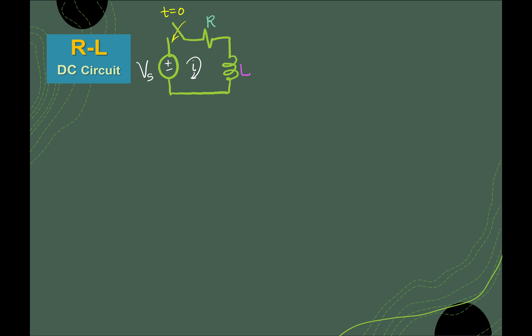Our goal here is to understand the behavior of a RL circuit. From our previous lectures, we have learned about Kirchhoff's Voltage Law — that is, the summation of voltages is equal to zero, or the summation of voltage drops is equal to zero.